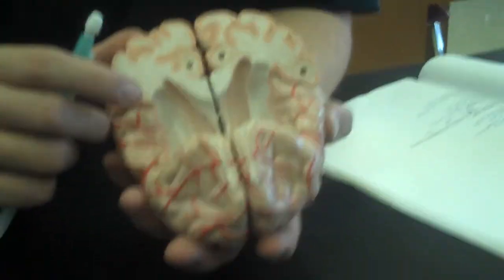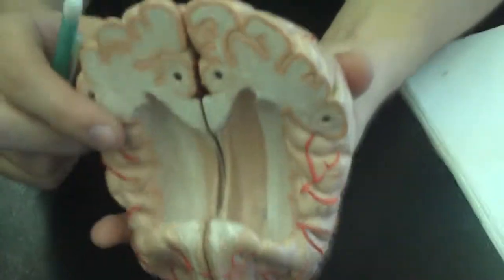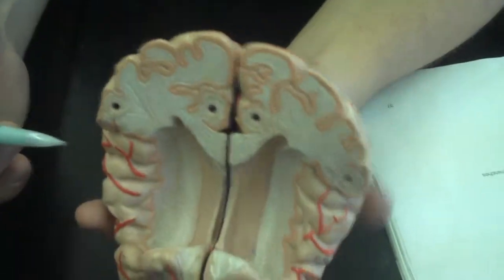Alright, now we're going to look at the coronal section. There's actually a model that has the coronal section, but this one you can see everything that's of any importance.